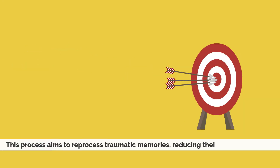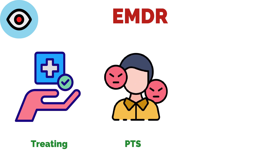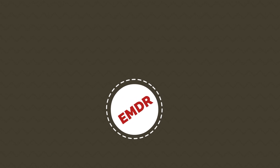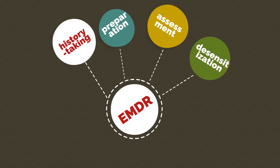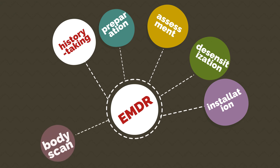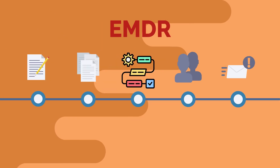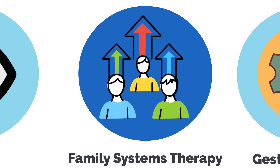The EMDR process aims to reprocess traumatic memories, reducing their emotional impact. EMDR can be effective for treating PTSD and other trauma-related disorders. The therapy follows a structured eight-phase protocol including history taking, preparation, assessment, desensitization, installation, body scan, closure, and reevaluation. EMDR is based on the adaptive information processing model, which posits that trauma disrupts normal information processing.